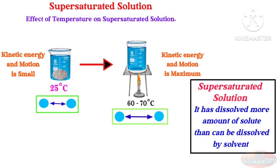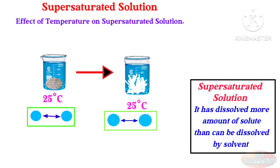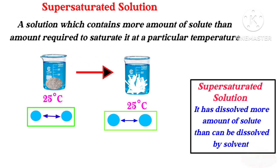What happens if the temperature of this supersaturated solution decreases back to 25 degree centigrade? The space between the water molecules will decrease and the extra dissolved sugar or solute will crystallize out. Hence, we say that this solution at 25 degree centigrade is now supersaturated because water has dissolved more amount of solute than can be dissolved by water at 25 degree centigrade. Therefore, we define supersaturated solution as a solution which contains more amount of solute than the amount required to saturate it at a particular temperature.